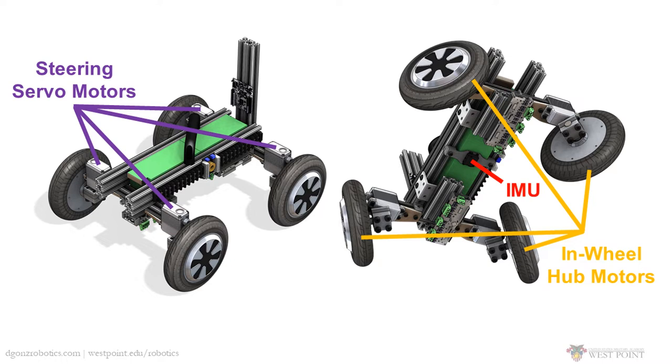An inertial measurement unit is used to detect freefall and provide angle feedback. When Agro is in the air, our controller uses this feedback to align the wheels appropriately and drive them to stabilize the body's orientation and land upright.